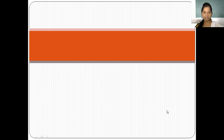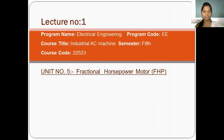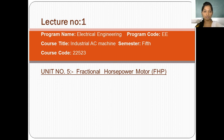Good afternoon all. Today we are going to conduct our first online lecture for the program Electrical Engineering, program code EE. Course title is Industrial AC Machine, semester is 5th, and course code is 22523. Our unit number is 5 and its name is Fractional Horsepower Motor.